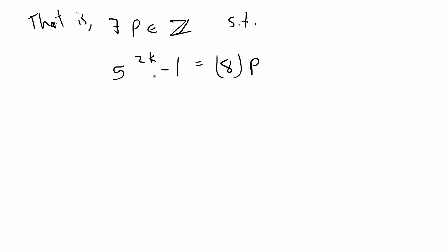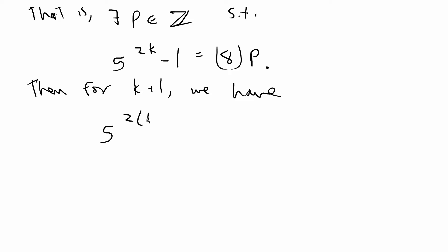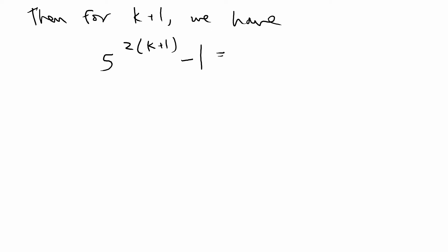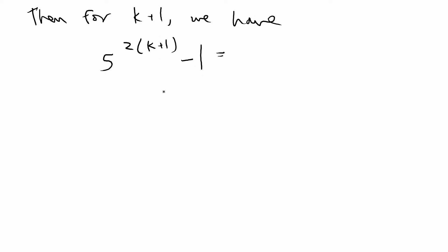So if 5 to the 2k minus 1 is divisible by 8, you're always going to be able to write 8 times some integer on the other side of the equation. That is our definition of being divisible by 8, and now we're going to use what we assumed to prove it also holds for k plus 1. For k plus 1 we plug in k plus 1 where there's k, giving 5 to the 2 times (k plus 1) minus 1, and we'll manipulate this until we get it to some multiple of 8.